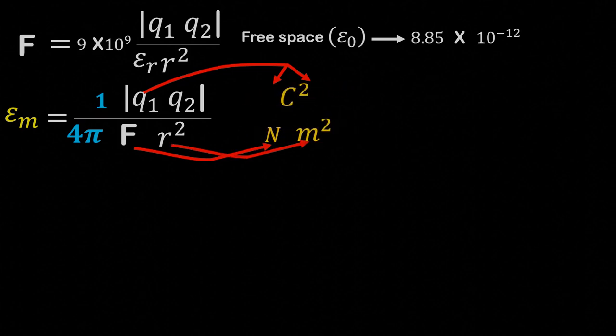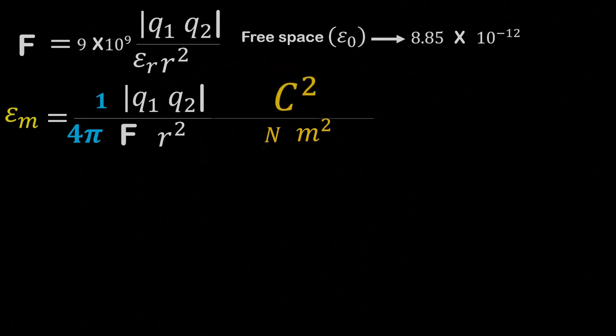By simplifying this, we get the unit of permittivity as Coulomb square per Newton meter square, which also can be written as Coulomb square Newton inverse meter minus 2.